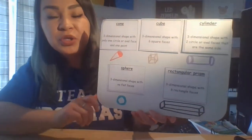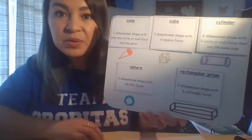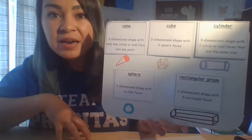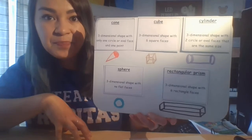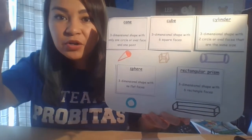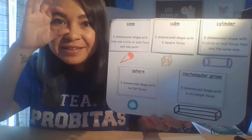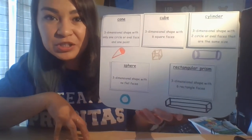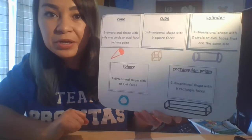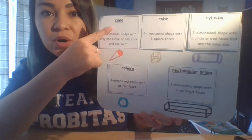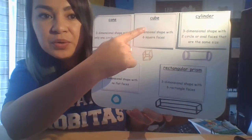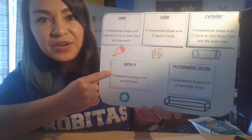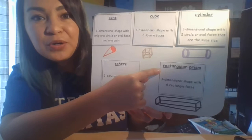So I'm going to show you some things that I found around my house and we're going to try to name them and name their 3D shape. Go ahead and put on your 3D goggles and you're going to help me name the following shapes. Let me remind you of what shapes we're looking for: the cone, the cube, the cylinder, the sphere, and the rectangular prism.